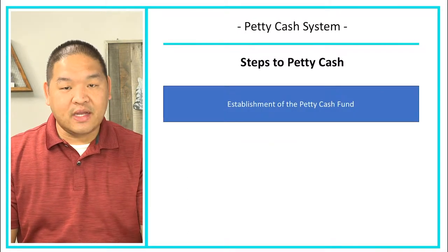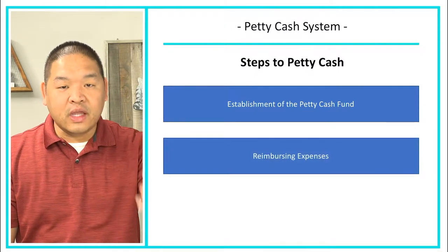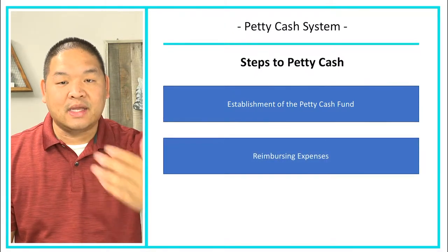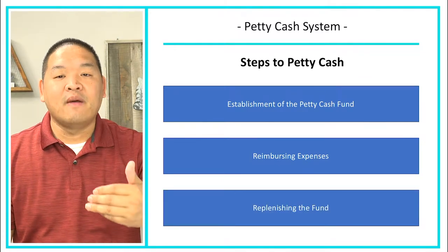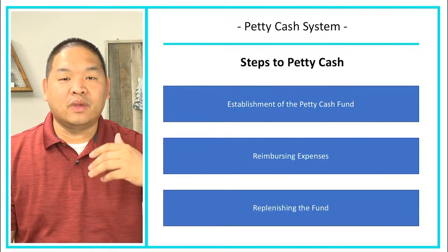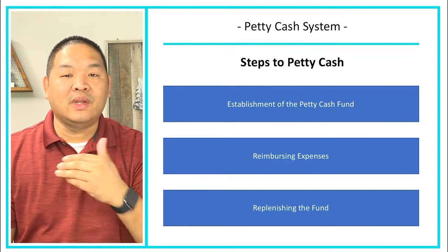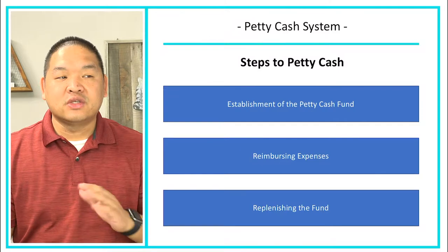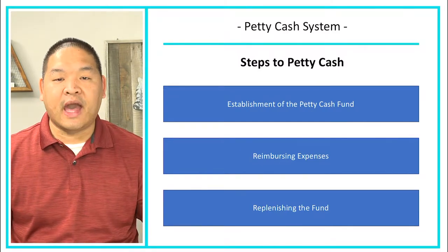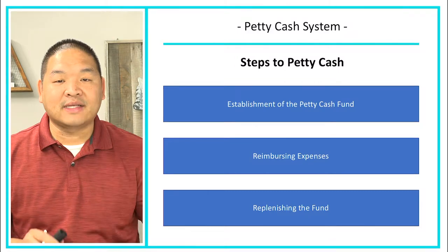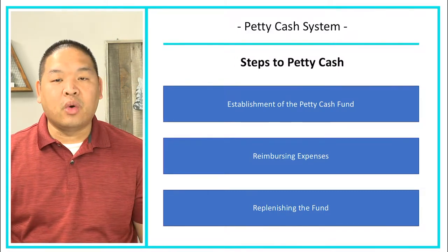Here are the steps to petty cash. First, we establish the petty cash account or fund. Then we start reimbursing expenses through the fund. Finally, we replenish the fund when it gets low or at the end of an accounting period, so all expenses are booked in the right period. We have an example in the next lesson that walks through all three steps.